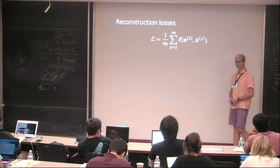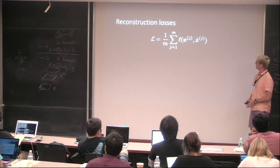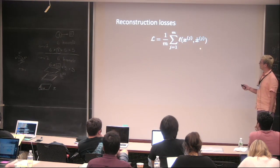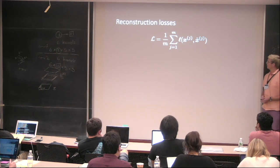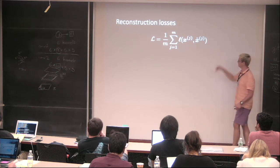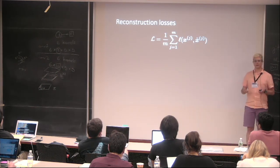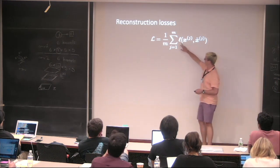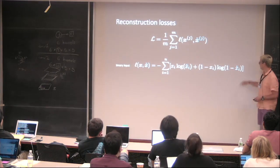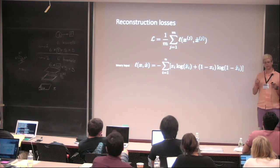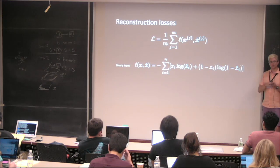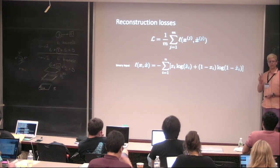We can choose different kinds of losses to train the autoencoder. We minimize the average of per-sample losses where we try to reconstruct the input. If you have binary data, you'd use binary cross-entropy — the same as what we used to classify pixels into different classes but for two classes. This is going to be basically a classification problem.